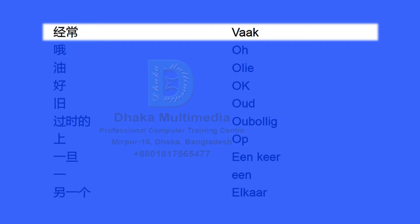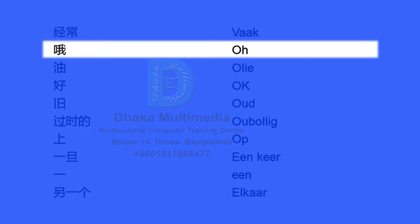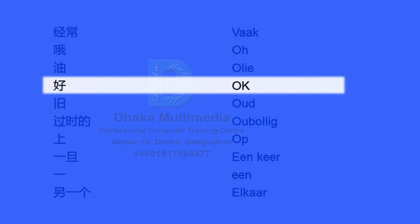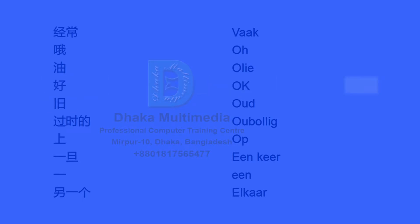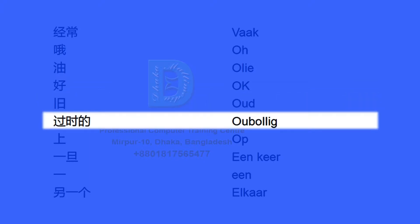经常 / vaak. 油 好. oud 过时的 (old, outdated).